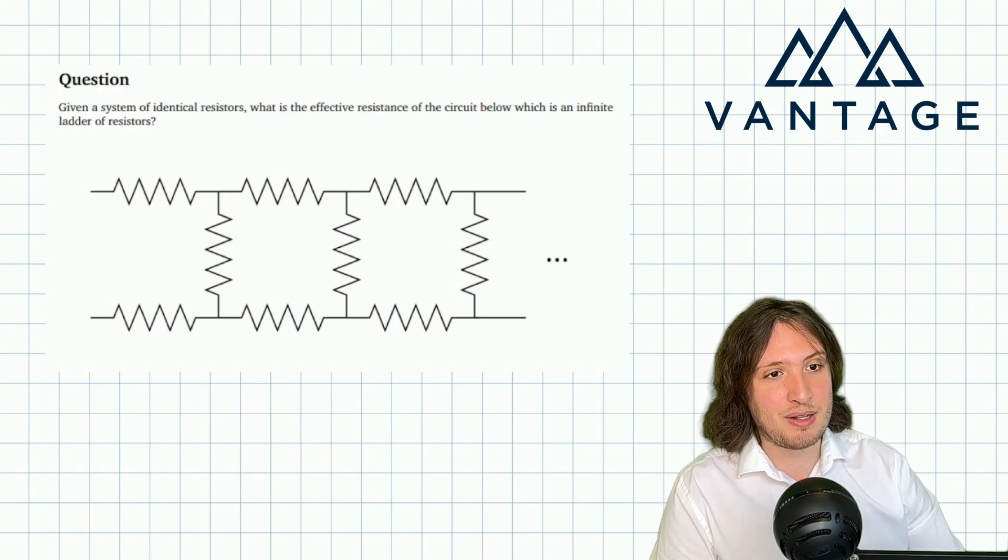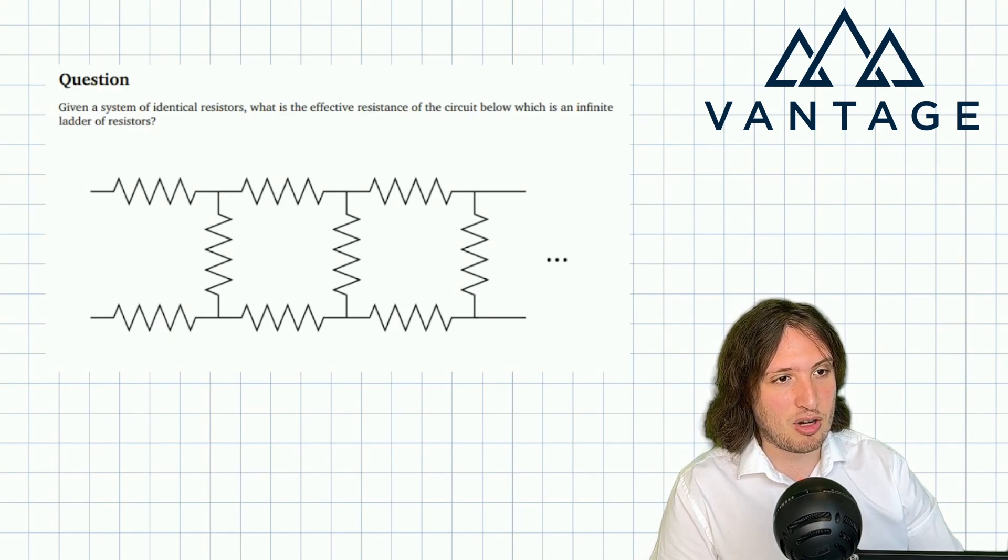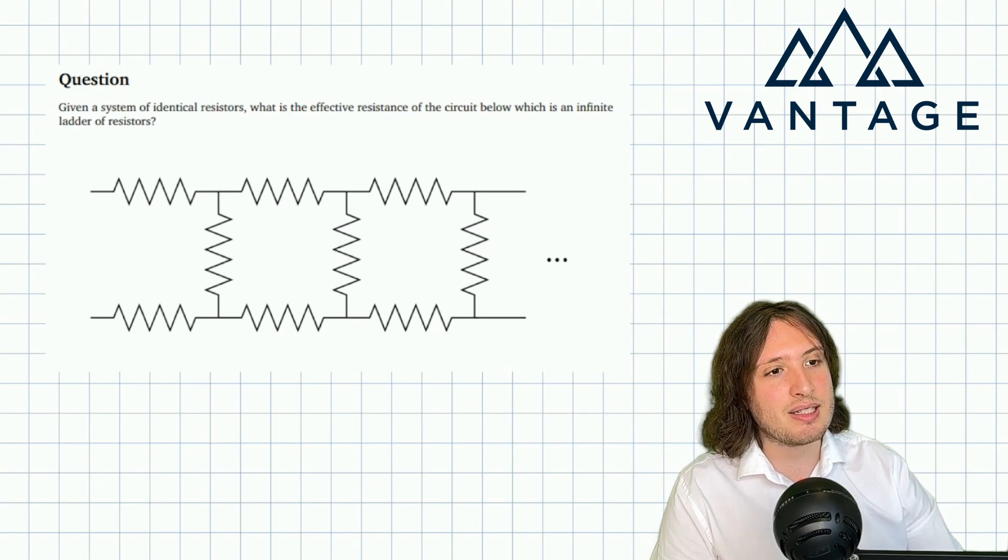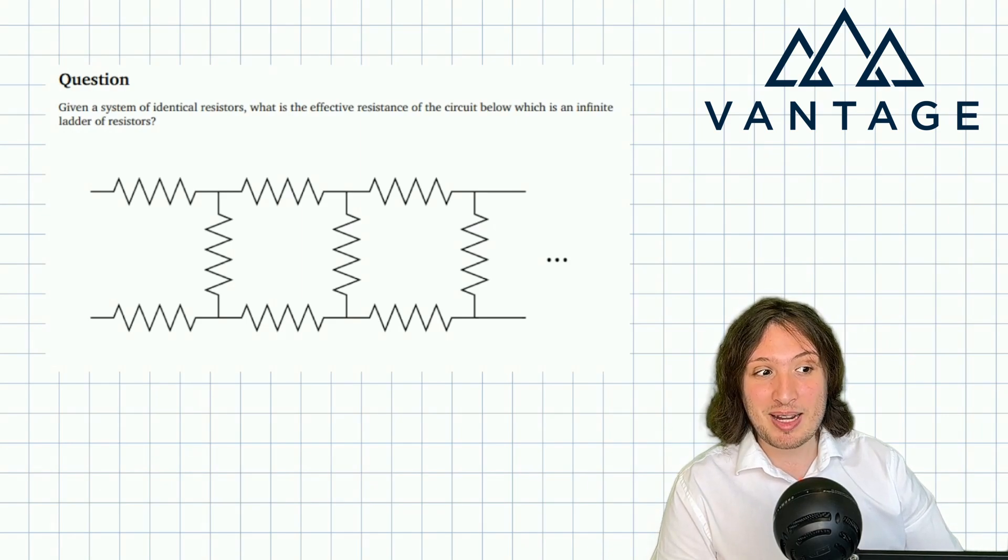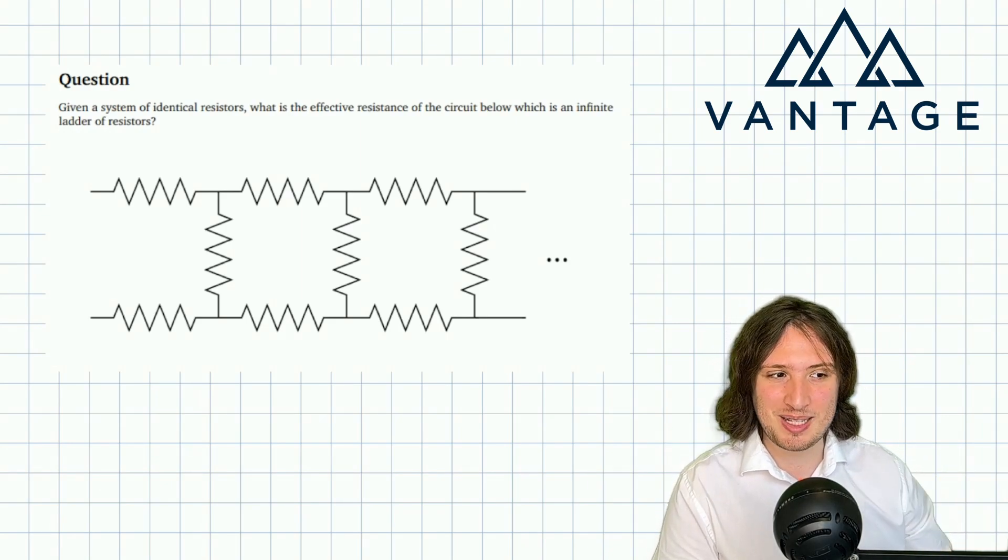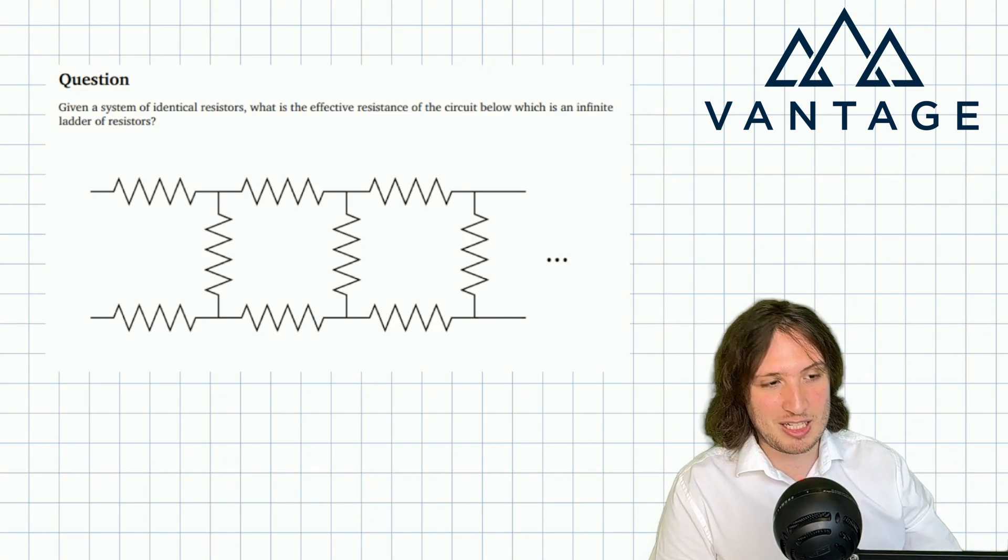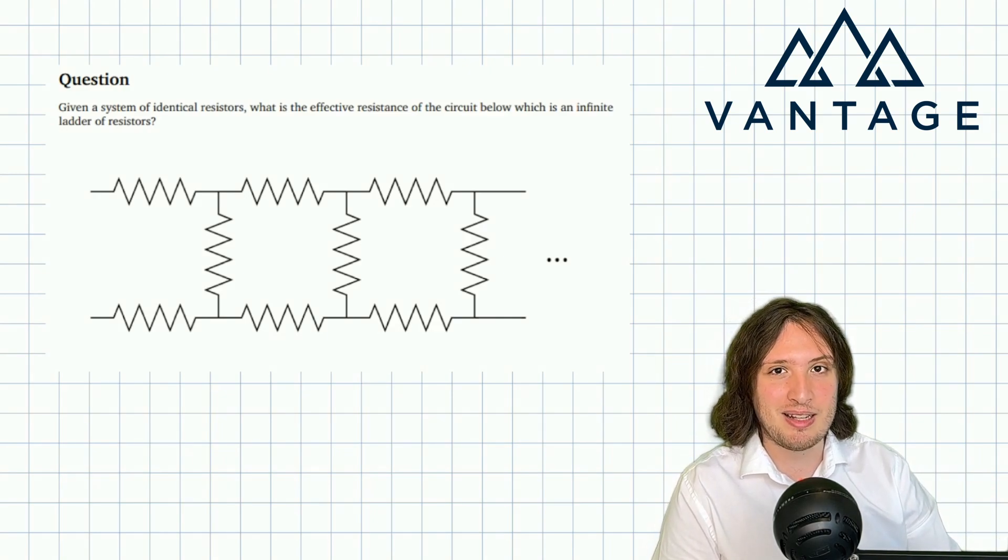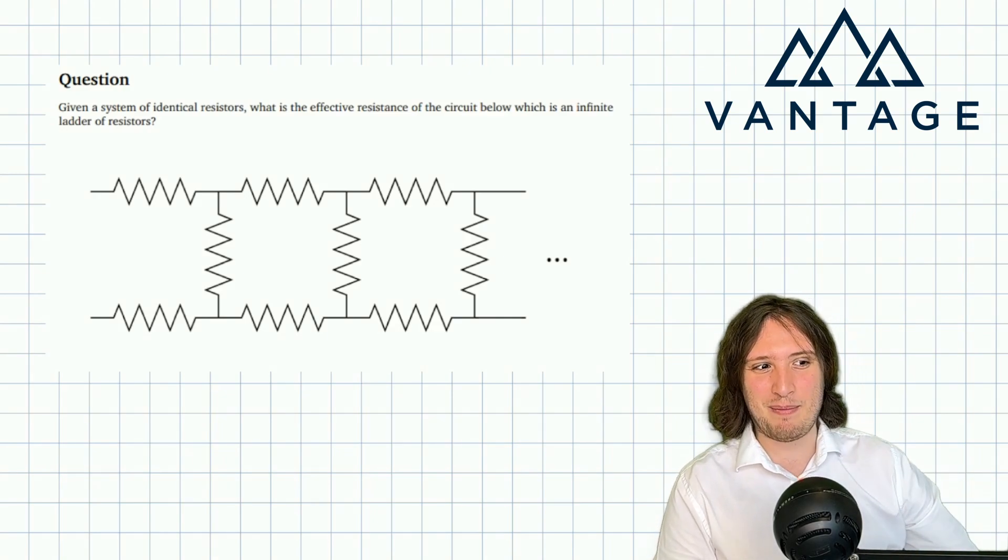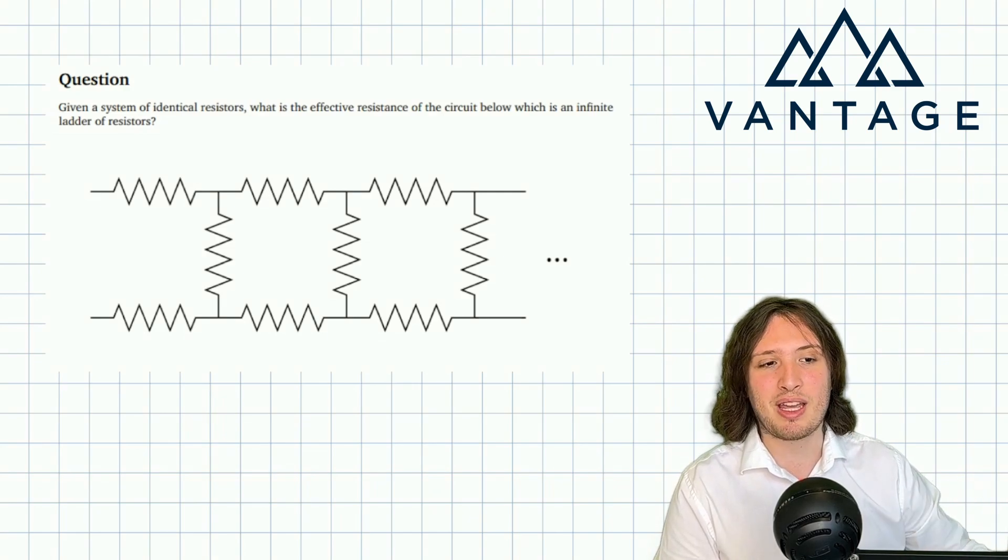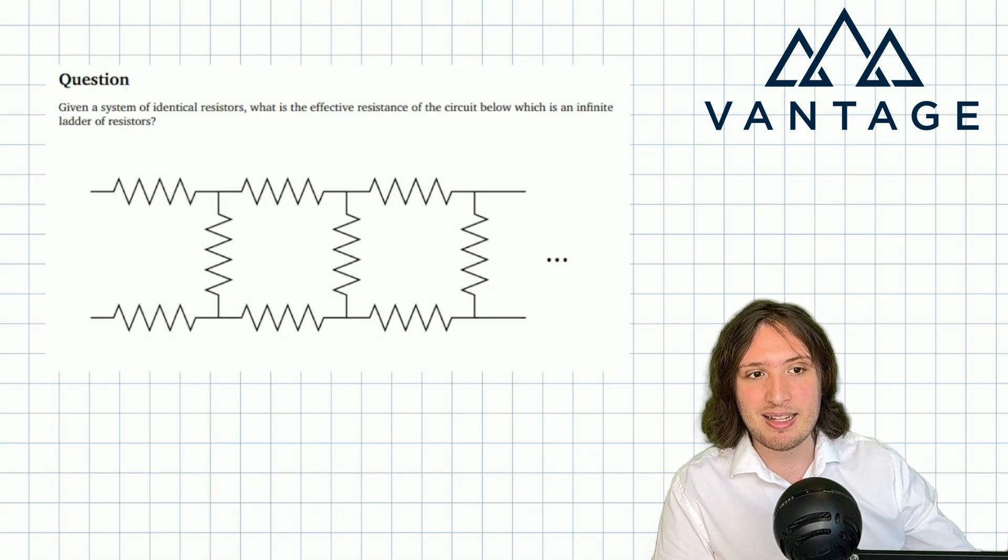We're considering an infinite system of resistors in this problem and we want the effective resistance. Infinite is a strange notion. Even though this is a physics question, we should have some experience with mathematics enough to tell us that we don't really mean infinitely many. What we are really talking about surely is a limit, that's the only way in which infinite makes sense.